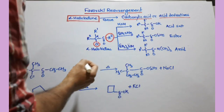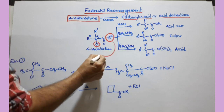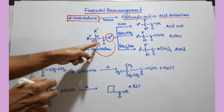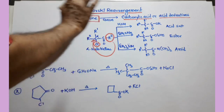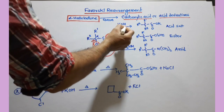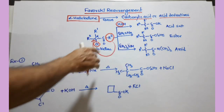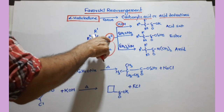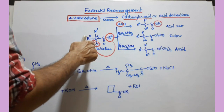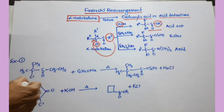Now, how to write the product: this R group, you have to change its position. Whatever group is here, you bring it to the position of Cl and remove that Cl — so that position is now vacant. And if you are using KOH, you take the OK part of KOH and join it at the position of R. So OK is coming here and R3 is taking the position of Cl. So you get an acid salt — a carboxylic acid salt.